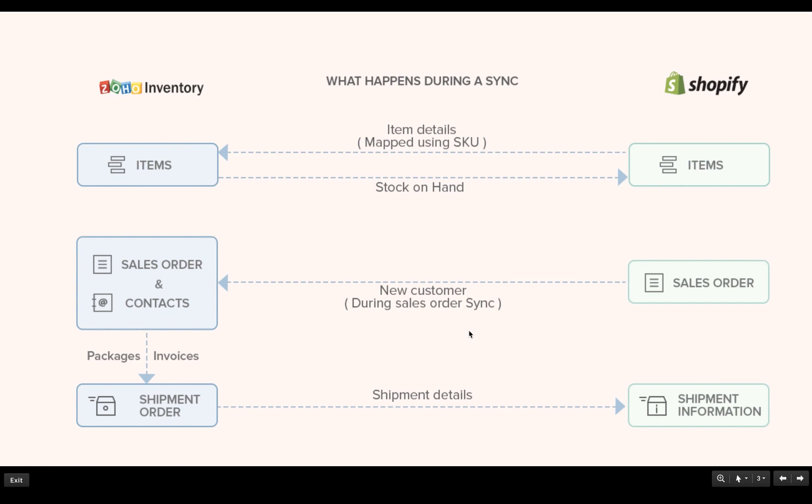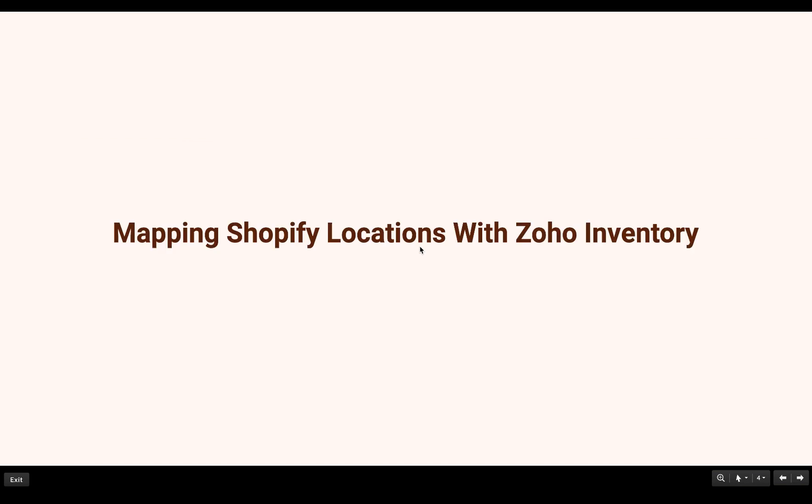Now let us see how you can map the locations in Zoho Inventory. There are two scenarios on how you can map Shopify locations with Zoho Inventory. However, before doing this, please ensure that you enable the multi-warehouse option in Zoho Inventory. To do that, click on settings and choose the warehouse option.